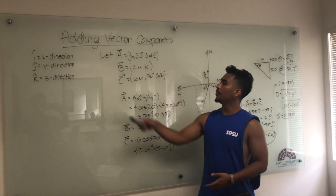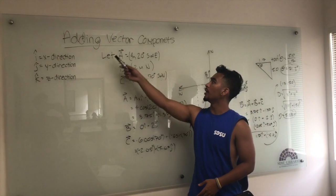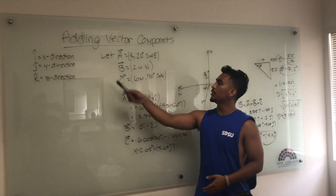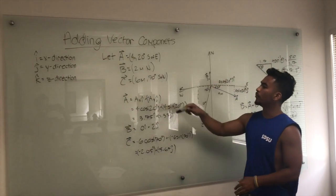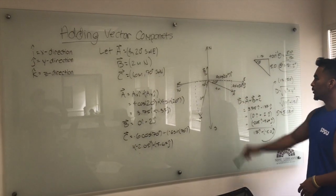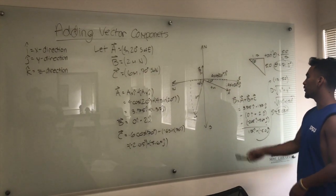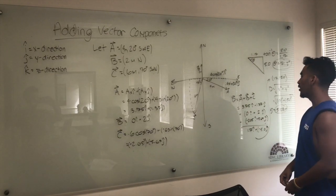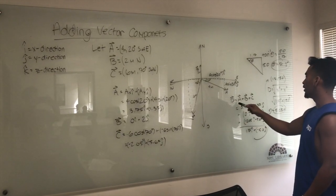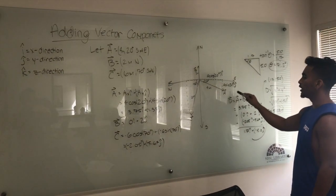Alright, so my unit is adding vector components. We have our three vectors right here, which I plotted on the graph right there. Our goal is to find d vector, the angle and length of that, by adding each vector together, each x and y coordinate of each vector together.